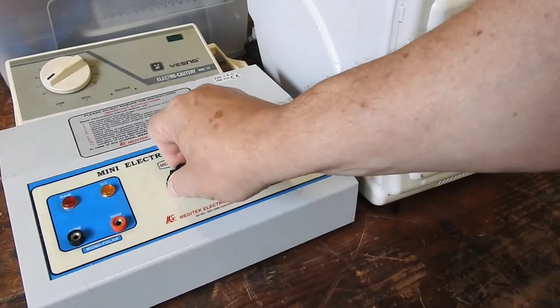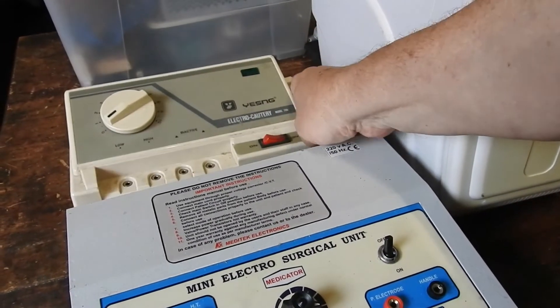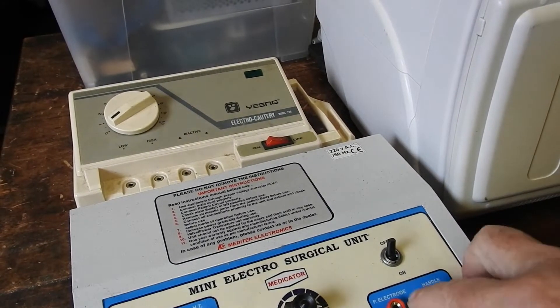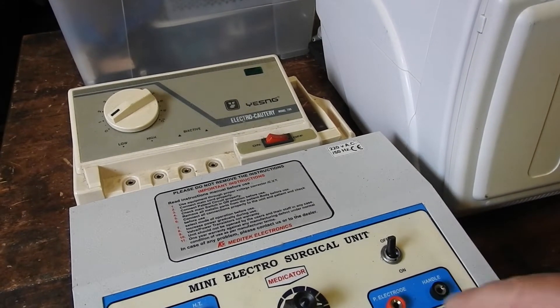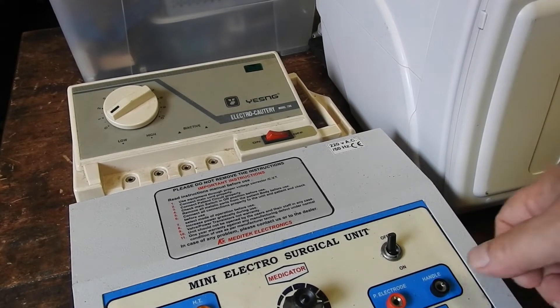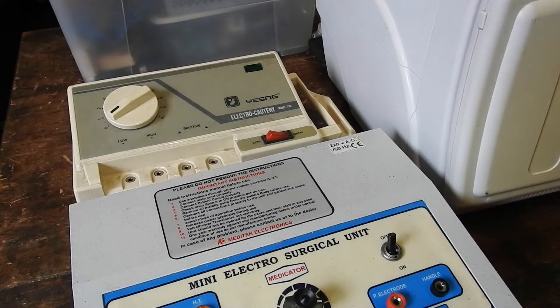A mini electro-surgical unit, and that appears to be a similar thing, electro-cautery. So I think you stick some electrodes in there, put one to a pad on somebody's body, small of their back I think, and then with the other probe you cut them open using, I think, a high voltage spark.